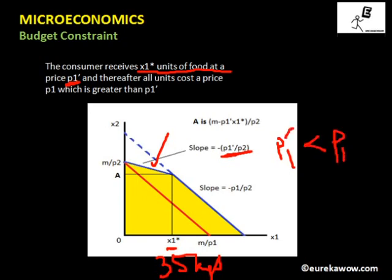After x1 star units of good one, the consumer purchases at the market price p1, so the slope returns to minus p1 by p2 — parallel to the original budget line. The solid blue budget line represents this constraint, showing how the Public Distribution System provides the first few quantities of food at subsidized rates, after which the consumer must buy from open markets.